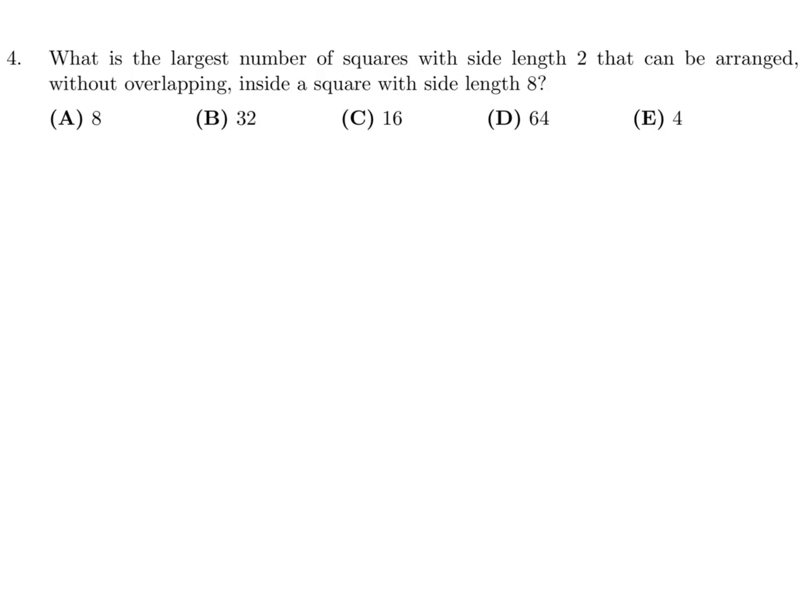What is the largest number of squares with side length 2 that can be arranged without overlapping inside a square of side length 8? So a square of side length 8, let's say this is 8. That area is 8 times 8, which is 64. So 64 has got to be the total area.